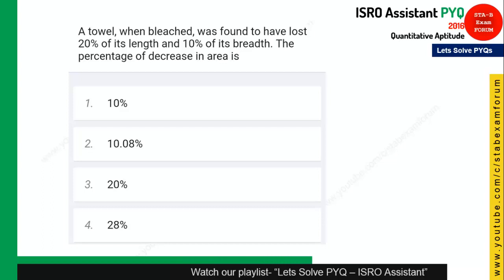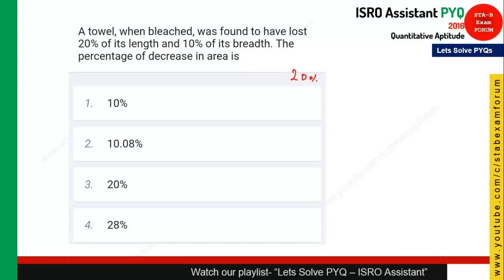The next question: a towel when bleached was found to have lost 20 percent of its length. As you know, 20 percent is 1/5, so if original length is 5, since it is lost, it becomes 4.